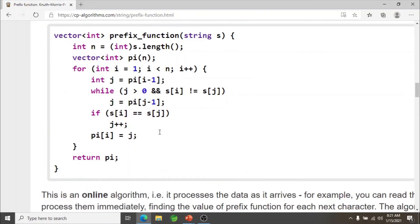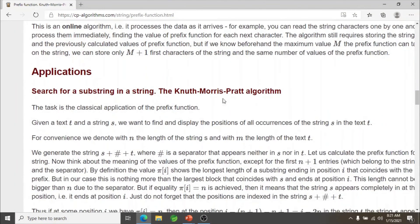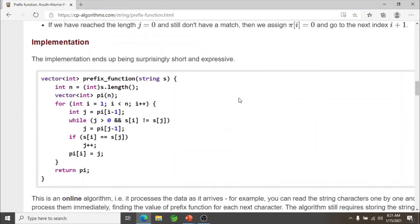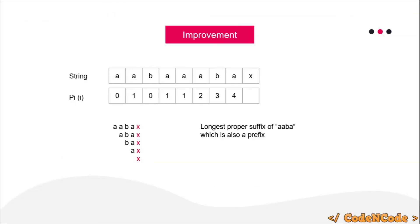This is how the whole algorithm works — this covers only the calculation of the prefix function. Once you understand the prefix function very well, you won't have any problem understanding the KMP substring search algorithm, as that part becomes very easy. If you have any doubts or queries, post them in the comment section. Depending on the number of queries, I may do one more lecture on KMP or move on to problems related to KMP. Thanks for watching and keep coding!